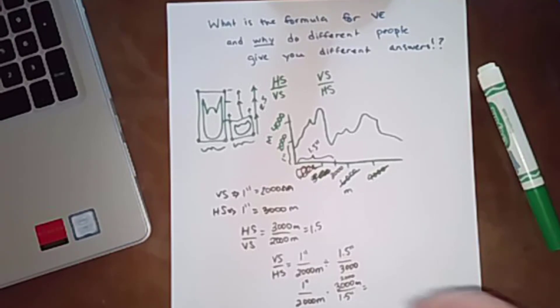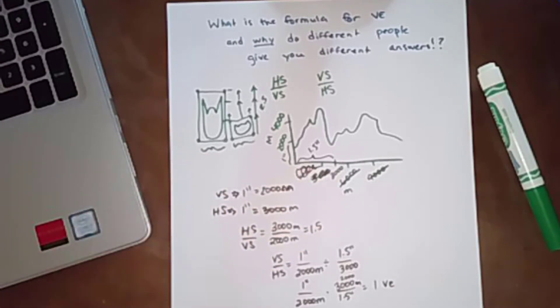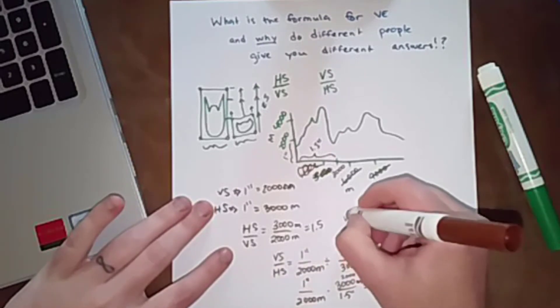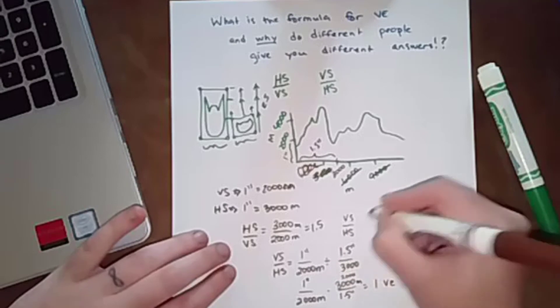So 2,000 over 2,000 is 1. One times vertical exaggeration. If we hadn't changed the scale, if we were just going to go back to this example up here and we did vertical scale divided by horizontal scale,